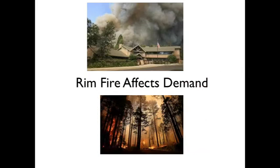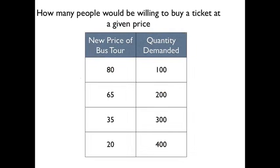So back to our idea of covering the fire. We're going to shift the demand curve. There was a fire — a lot of smoke over Yosemite. We went back and redid the schedule of how many people were willing to go at each price. People weren't willing to pay as much, so the whole curve shifted down. The first hundred people who before were willing to pay $95 are now only willing to pay $85. The whole curve shifted down, and the number of people showing up to go on the tour would be less.